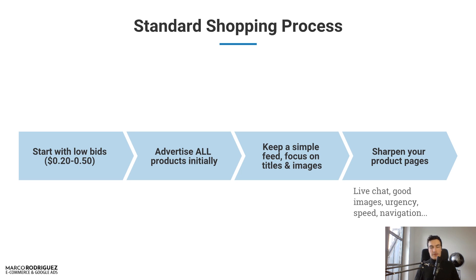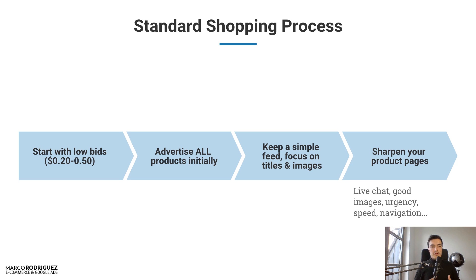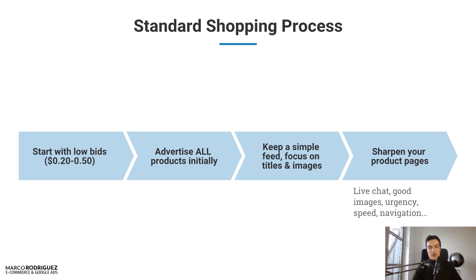Sharpen your product pages — have live chat, good images, some legitimate urgency. Not the crazy '80% off, two products left' exaggeration, but some real urgency and promotions every now and then to make people feel they should take action now. Good page speed is super important, and easy navigation. Don't have the typical dropshipping navigation with one huge category — use filters and subcategories. If your product page isn't on point, you can't convert people long-term and profitably.